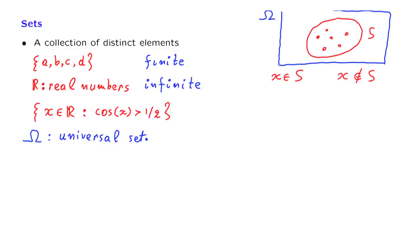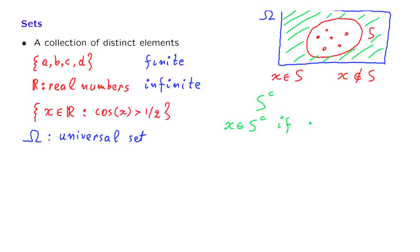Once we have a universal set, we can talk about the collection of all objects or elements that belong to our universal set but do not belong to the set S — that is, everything outside the set S. We denote it this way and call it the complement of the set S. An element belongs to the complement of S if x is an element of the universal set and x does not belong to S. Notice that if we take the complement of the complement — anything that does not belong to the green set — we get back the red set. So the complement of the complement of a set is the set itself.